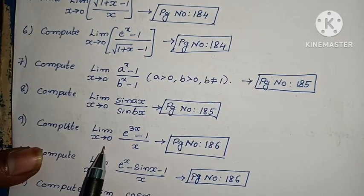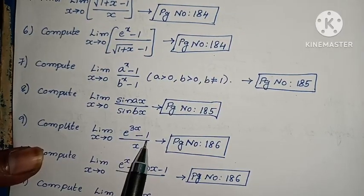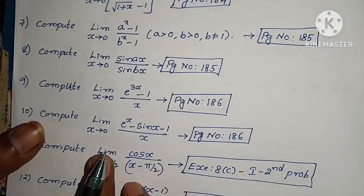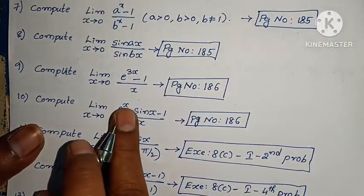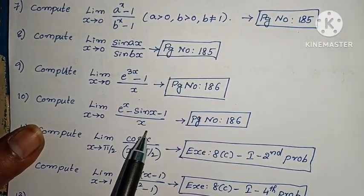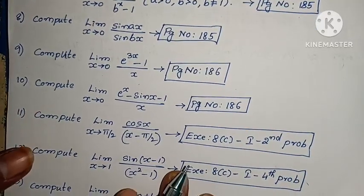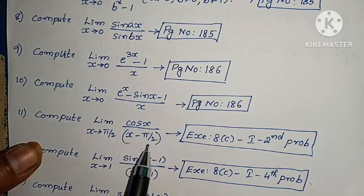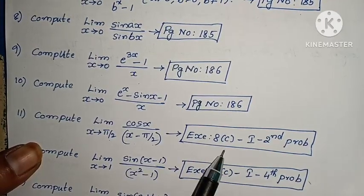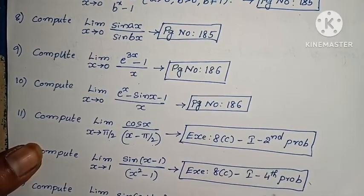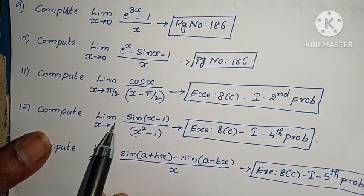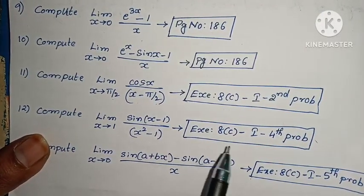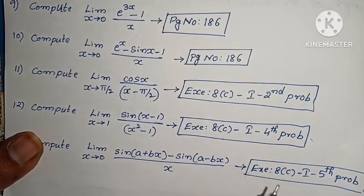Next, compute limit x tends to 0, e to the power 3x minus 1 by x. Page number 186. Next, compute limit x tends to 0, e to the power x minus sin x minus 1 by x. Page number 186. Next, compute limit x tends to pi by 2, cos x by x minus pi by 2 — C, first Roman, 2nd problem. Next, compute limit x tends to 1, sin(x minus 1) by x squared minus 1 — C, first Roman, 4th problem.